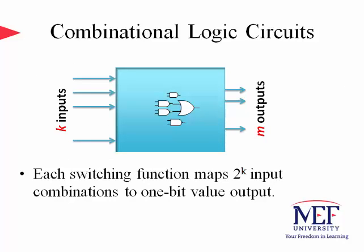Let's just review the combinational circuits in a nutshell. There are K inputs to the combinational circuit and M outputs. Each switching function maps 2 to the K possible input combinations to a 1-bit valued output. So there are M distinct Boolean functions that the logic circuit implements. The workaround procedure that implements these M Boolean functions is known as the combinational or combinatorial logic circuit design.